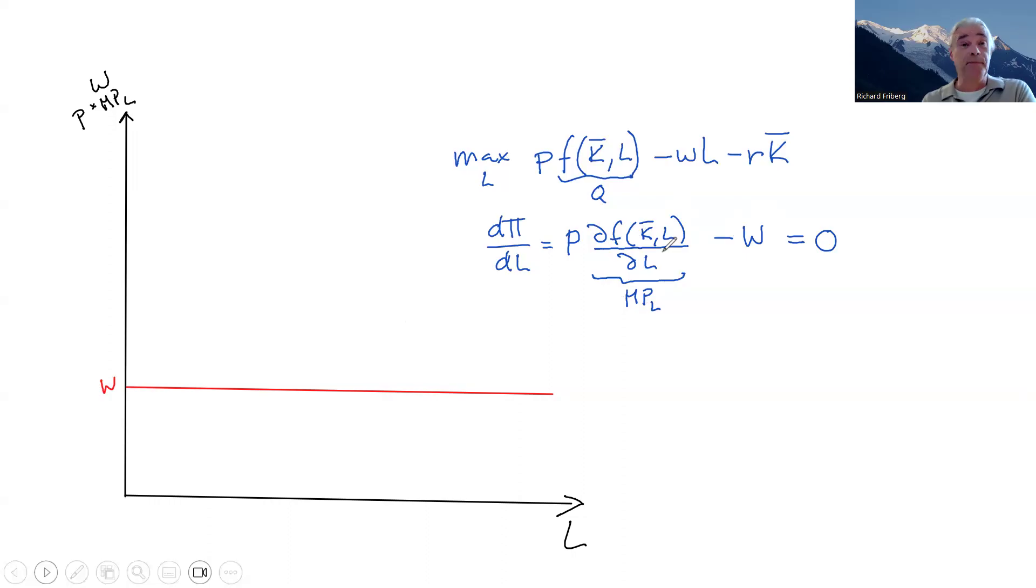This part and how much will it hire? Well, we need to plot out the price times the marginal product of labor. And we've said before that the typical assumption in economics is that the marginal product of labor is decreasing. So each additional worker, each additional hour worked adds to output. But they add successively less. The 100th worker adds less than the 99th, et cetera, for a given capital stock.